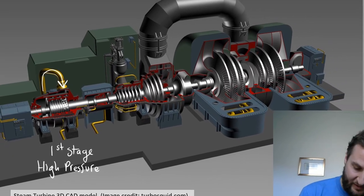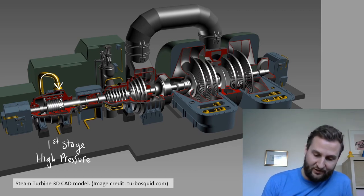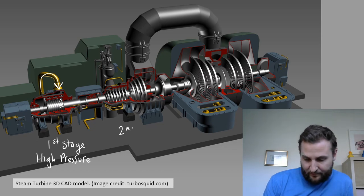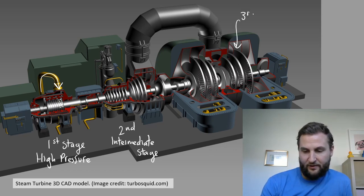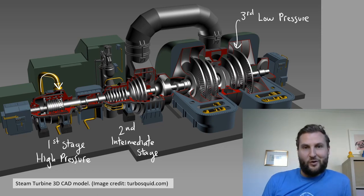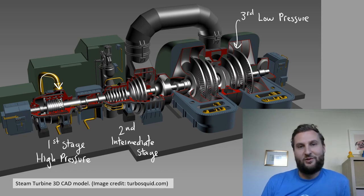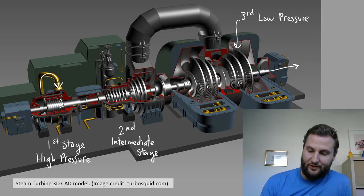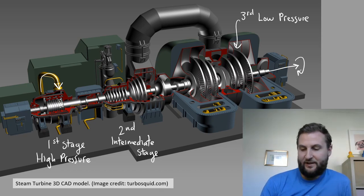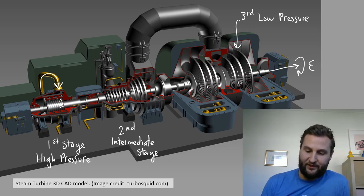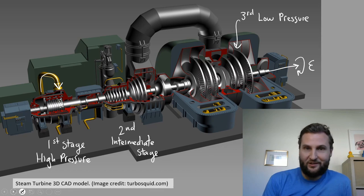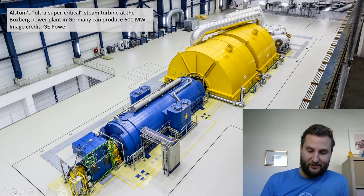After the first stage, the steam loses some energy by rotating the shaft, then we progress to an intermediate stage, and further along to the large turbines at the third or low pressure stage. The whole point of all of this is to rotate a shaft so that at the other end we can connect a generator and create an EMF — generating electricity. You can rotate that shaft however you want; steam happens to be one of the easiest ways.